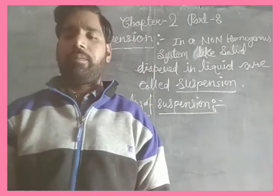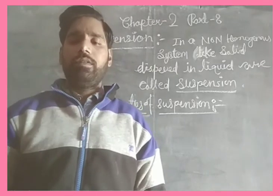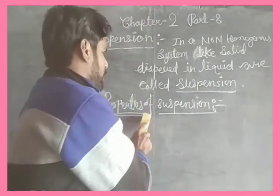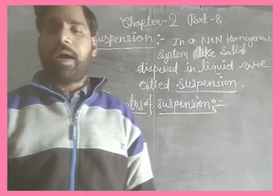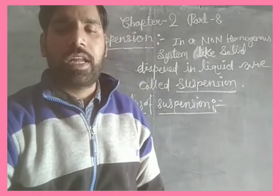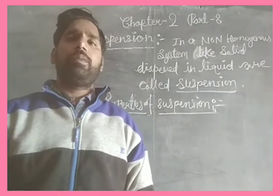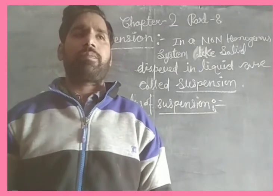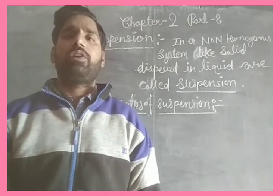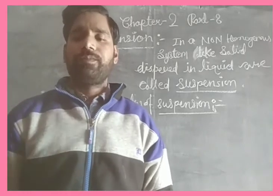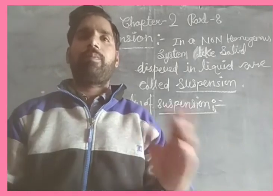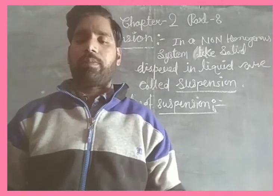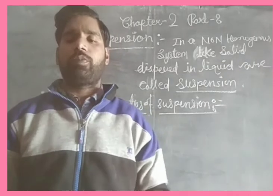Particles of suspension can be seen by the naked eyes. The particles of suspension scatter a beam of light. When a beam of light passes through a suspension or heterogeneous mixture, a visible path can be observed.